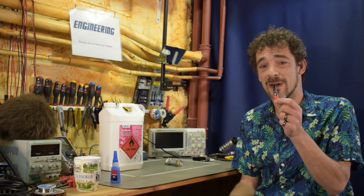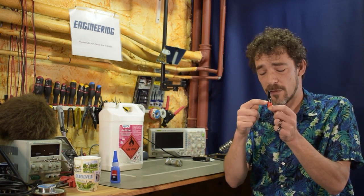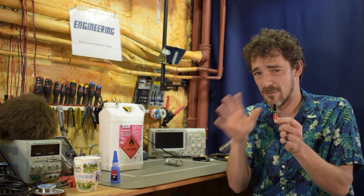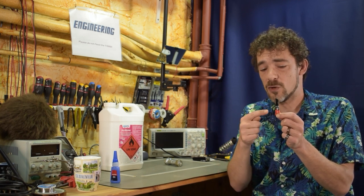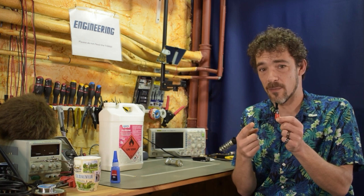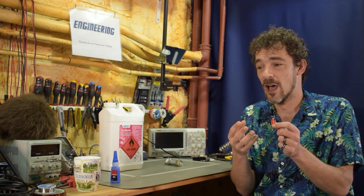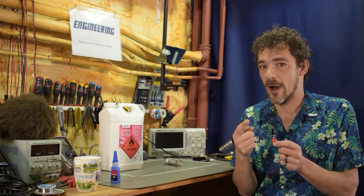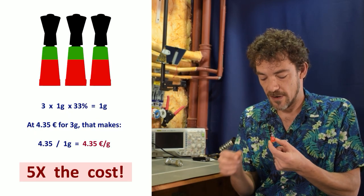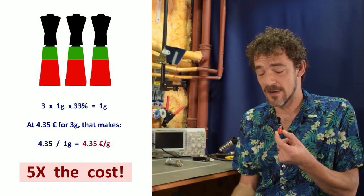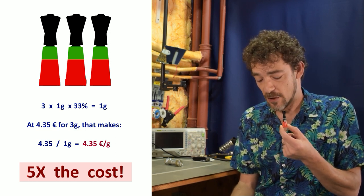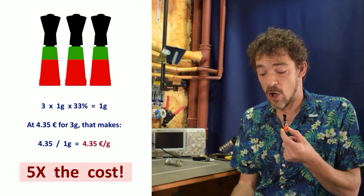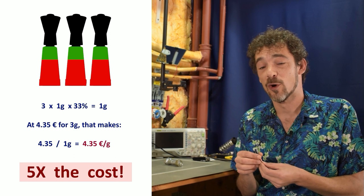What about these guys? Well as I said you can use usually about a third of these before the whole thing just gets gummed up and you have to throw it away. So of each one gram tube you're only using a third of a gram. So if you get three tubes in a pack, of that three grams you're basically only using one full tube, one gram. So at 4 euros and 35 cents for three grams of this stuff, that works out to be 435 divided by one gram equals 4 euros and 35 cents per gram.